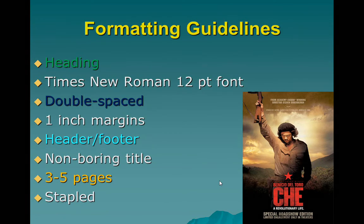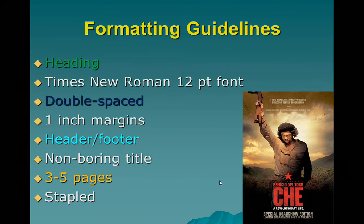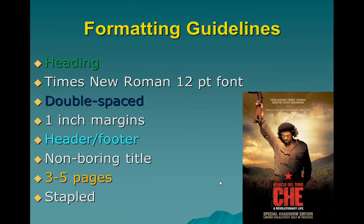For formatting guidelines: you need a heading with your name, the class, the date, and my name — look at the sample paper for that. The whole paper needs to be in Times New Roman 12-point font, double-spaced, with one-inch margins, and a header or footer with your last name and page number. It needs a title, and that title should not be 'My Rewriting History Essay' or the title of your movie. If your movie is Che, your paper title should not be Che — it needs to be more specific than that.